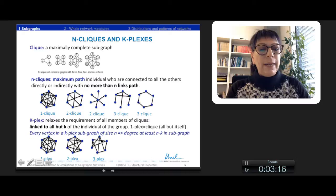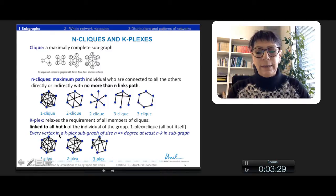And in three-plex, all nodes have at least three relations. One can mix N-click, so minimum paths, with K-Plex relaxing several links.